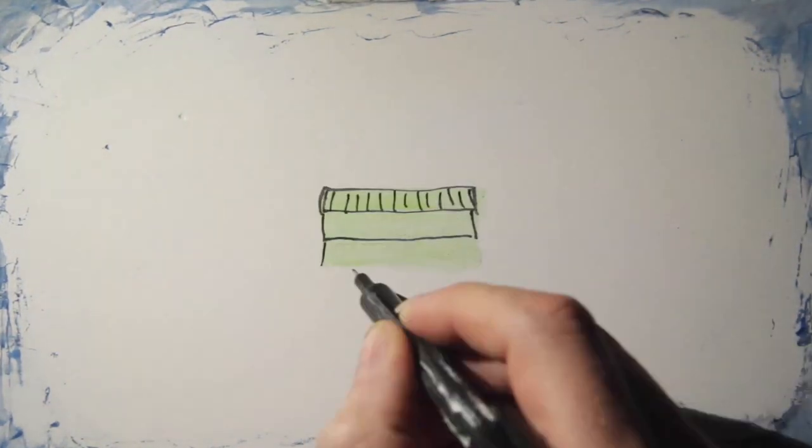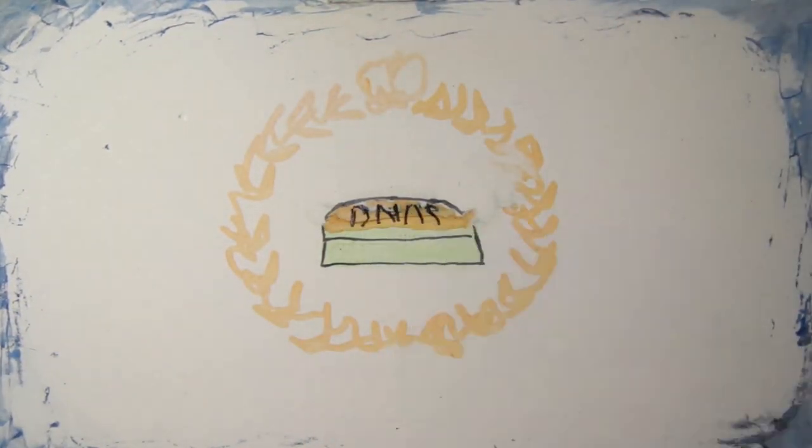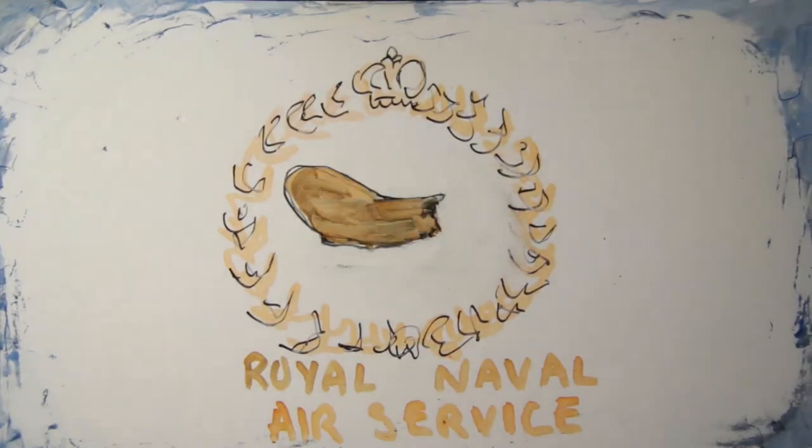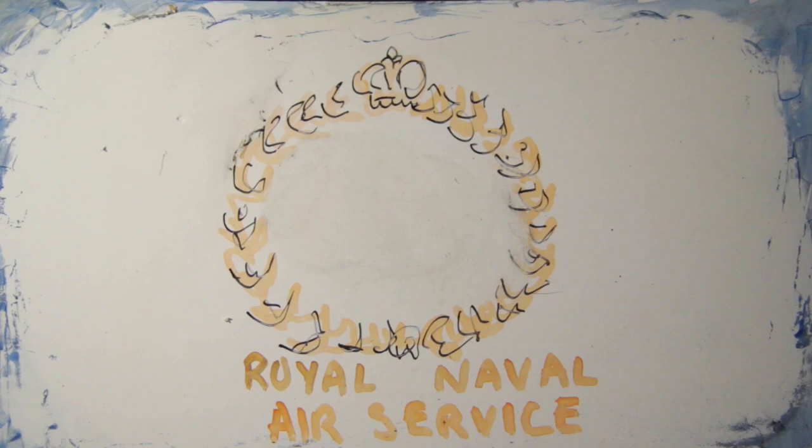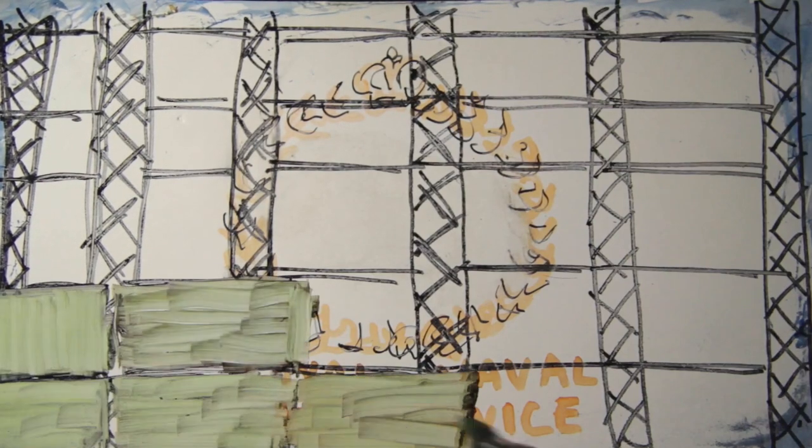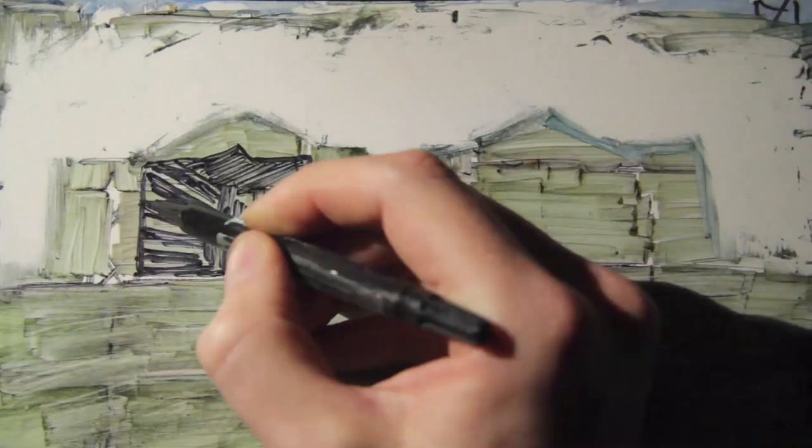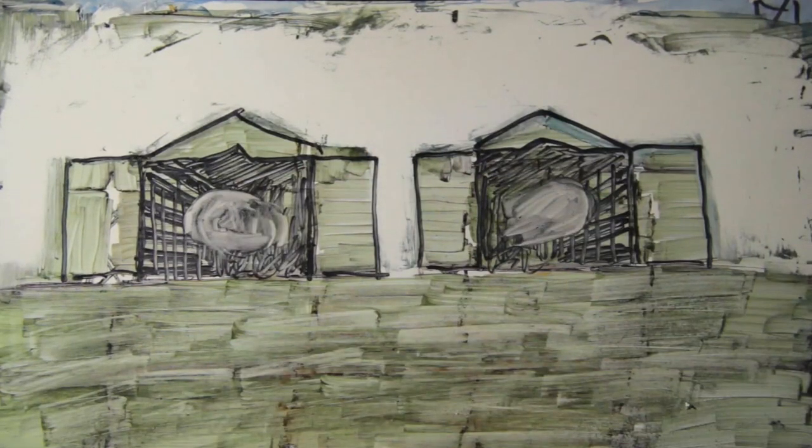Number two shed was a Royal Naval Air Base in Norfolk, Pullum. And they dismantled it, brought it here and enlarged it almost to the same size as the one that's there. So that's how you've got your twin sheds.